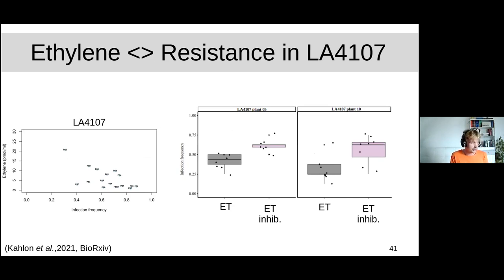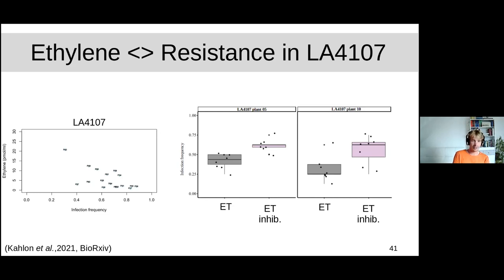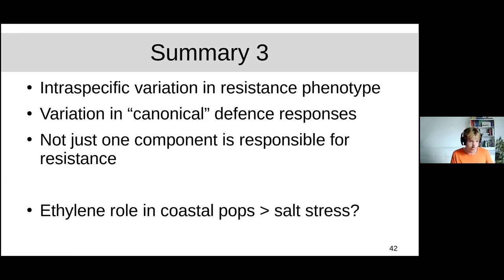We can show this experimentally: using a chemical inhibitor to block ethylene production in the ethylene-dependent population, infection frequency increases significantly. Both a very resistant plant and a slightly resistant plant become more susceptible when ethylene is inhibited, reaching a similar elevated infection level. This proves that ethylene is causally important for resistance in that population. The ethylene effect appears mainly in coastal populations, and ethylene is also known to play a physiological role in salt stress signaling — suggesting it may have been co-opted for pathogen defense in these salt-stressed coastal environments.